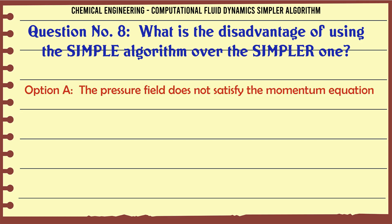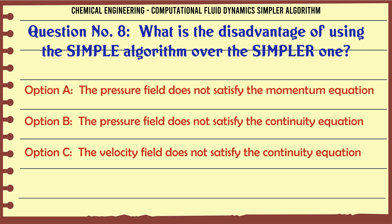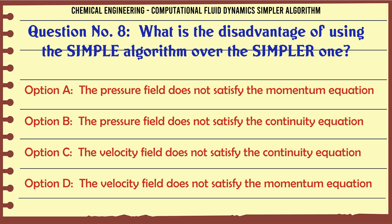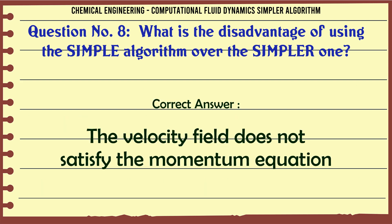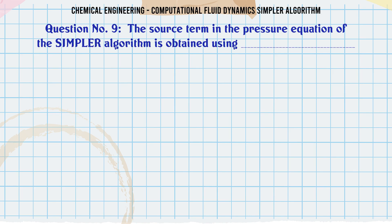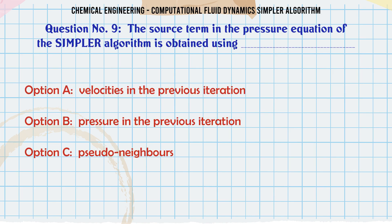What is the disadvantage of using the SIMPLE algorithm over the SIMPLER one? A. The pressure field does not satisfy the momentum equation, B. The pressure field does not satisfy the continuity equation, C. The velocity field does not satisfy the continuity equation, D. The velocity field does not satisfy the momentum equation. The correct answer is: The velocity field does not satisfy the momentum equation.